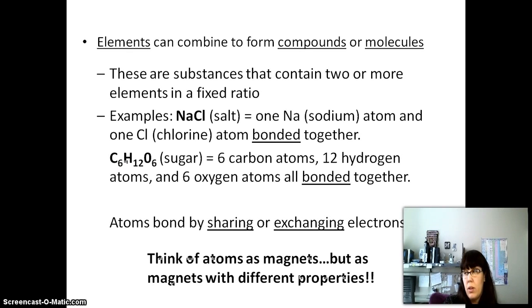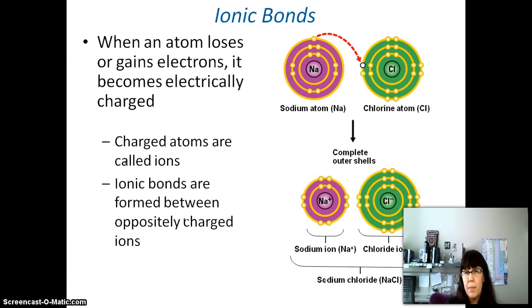How do atoms bond by sharing or exchanging electrons? You can think of them as magnets, but with different sorts of properties. There are three types of bonds. The first type is called an ionic bond. This is when an electron is gained or lost, and it changes the electrical charge of the atom. If you look at this picture, sodium loses the electron in its outermost shell, and as a result, it becomes slightly more positively charged—it becomes a cation. The chlorine atom, on the other hand, steals or takes the electron away from sodium and becomes slightly more negatively charged—it's an anion. Because they're slightly differently charged, a little bit positive and a little bit negative, there's a slight attraction between those ions, and that's what forms the bonds between them.